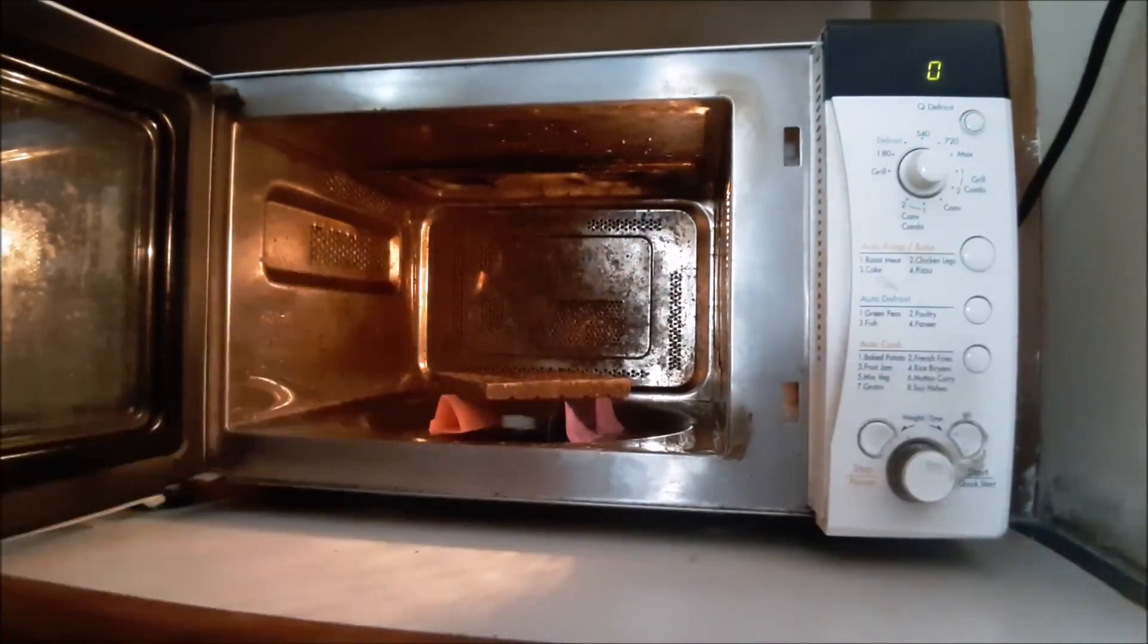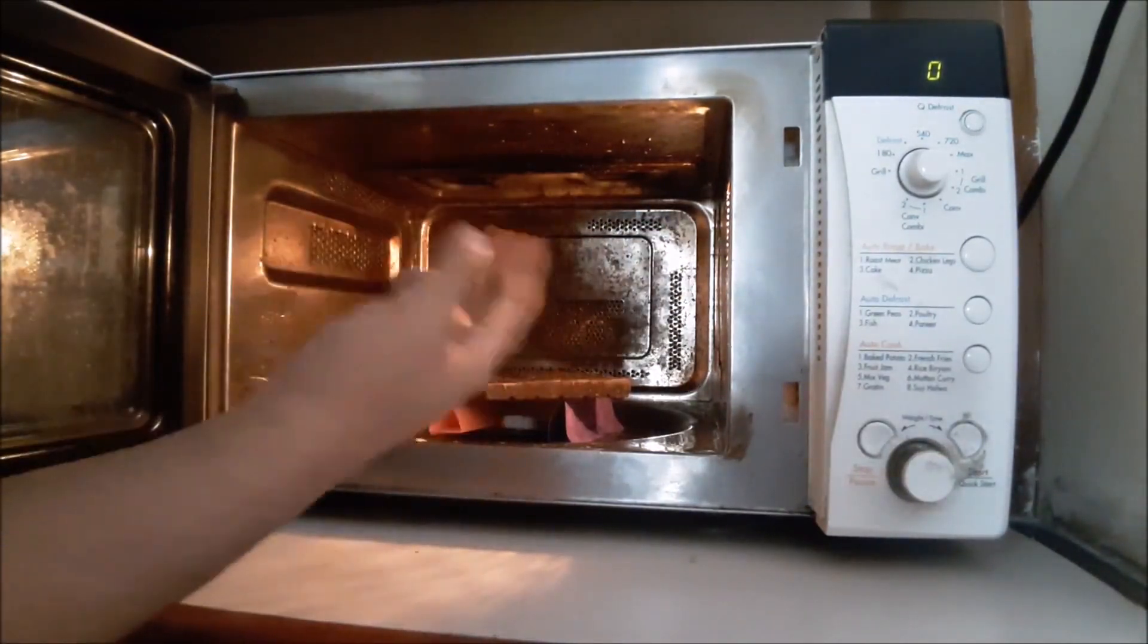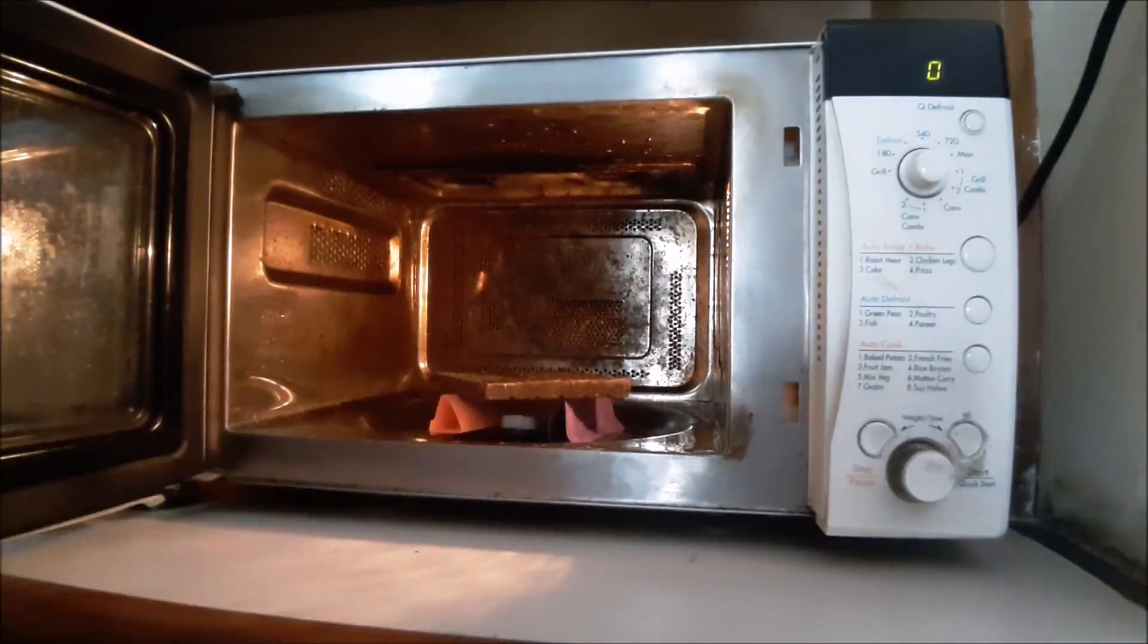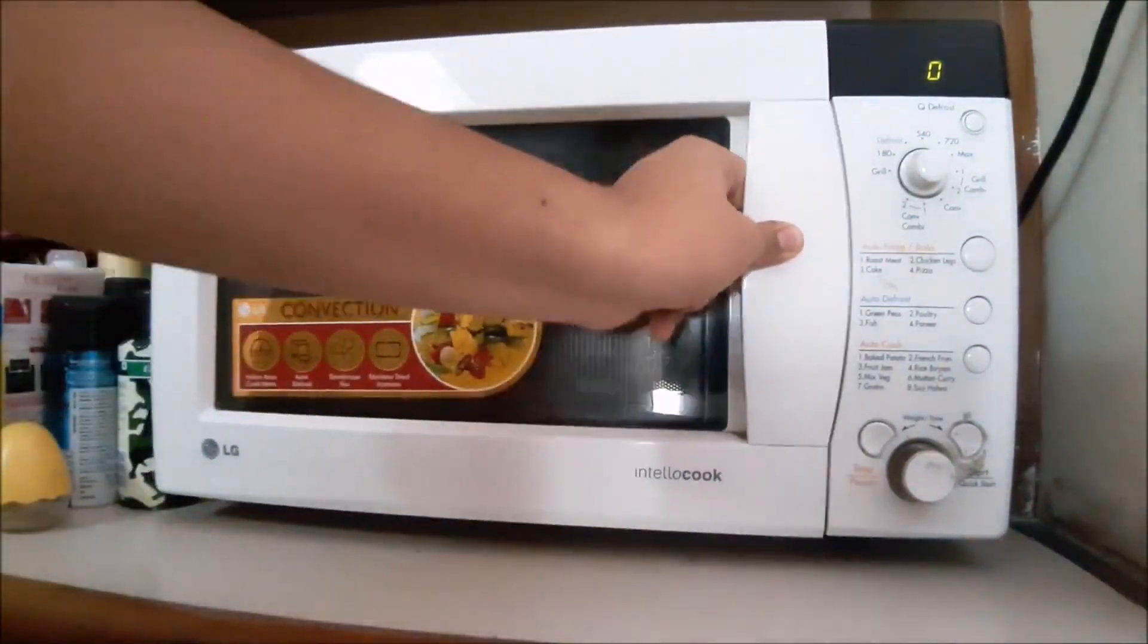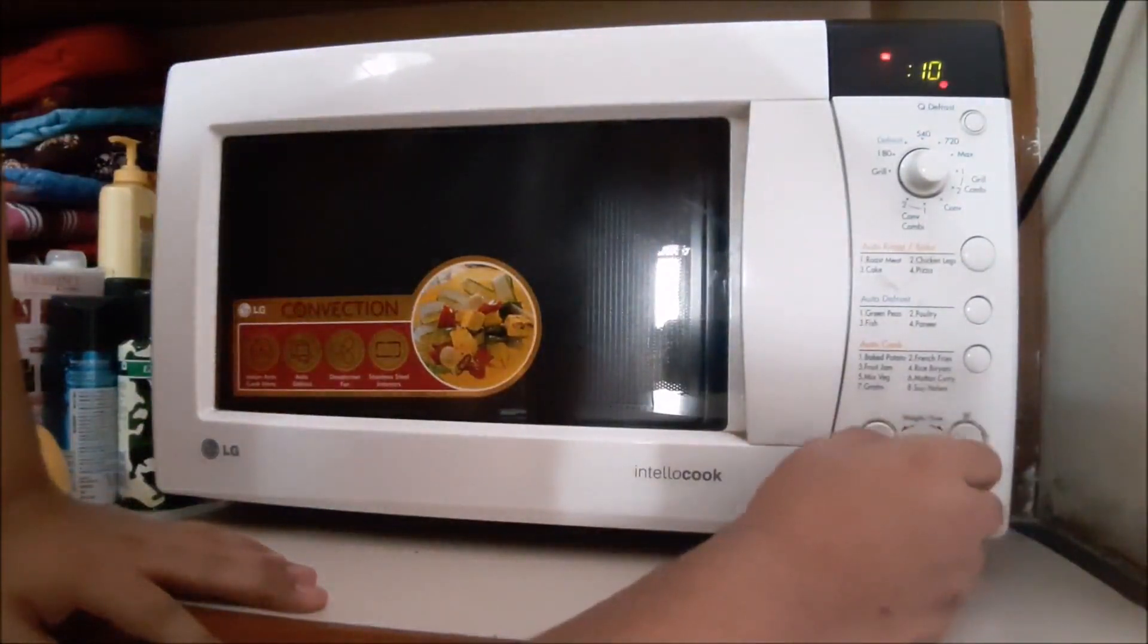So that's why microwaves have that spinny disc so that the points which are in the node region get heated. And now we are going to just start the microwave and wait for the chocolate to melt.